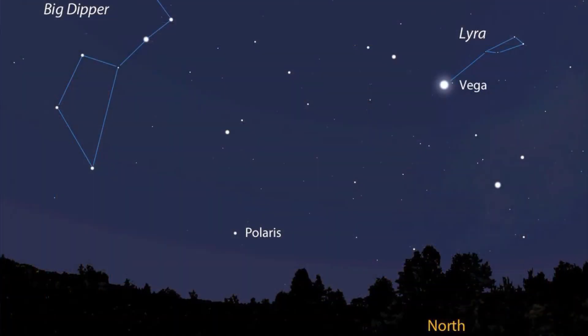Now we have the scale for magnitude measurements, but we need a reference point from which we can measure the magnitude of all other stars. Pogson actually defined Polaris as the reference point for his magnitude system.